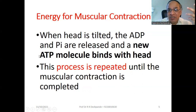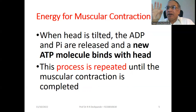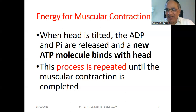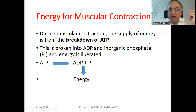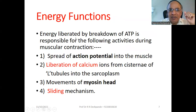Every time the myosin head tilts back, new energy is required. The process is repeated until the contraction is complete — the two Z lines come nearer and nearer. During muscular contraction, the energy supply comes from the breakdown of ATP into ADP and inorganic phosphate, liberating energy. You must write this equation in your examination: ATP → ADP + Pi + energy.